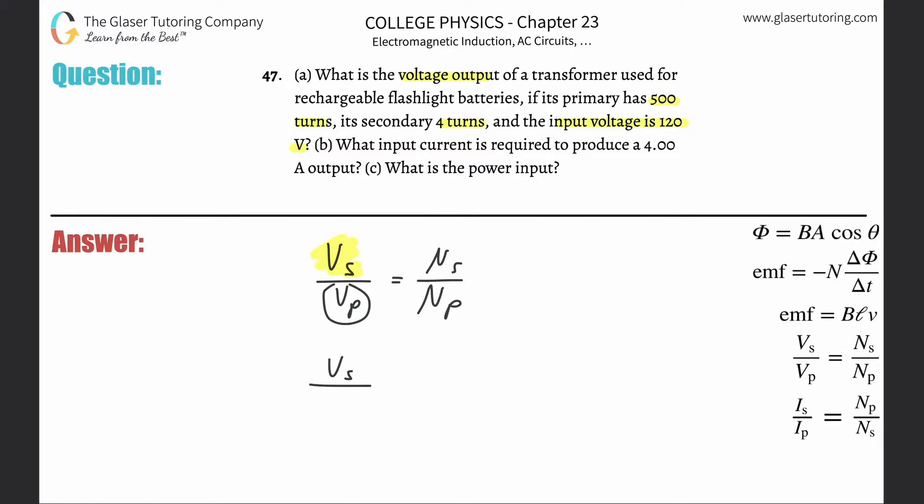So let's see what we know. So what's the primary voltage? Well, they told us the input voltage. Oh, input's always primary. So look at that. They gave it to us, right? 120 volts. What's the number of turns in the secondary? Look at that. They said secondary has four turns. Look at how nice this is, right? In the primary, how many? Oh, look, 500. Do a little algebra, and we're going to be able to get our answer, right?